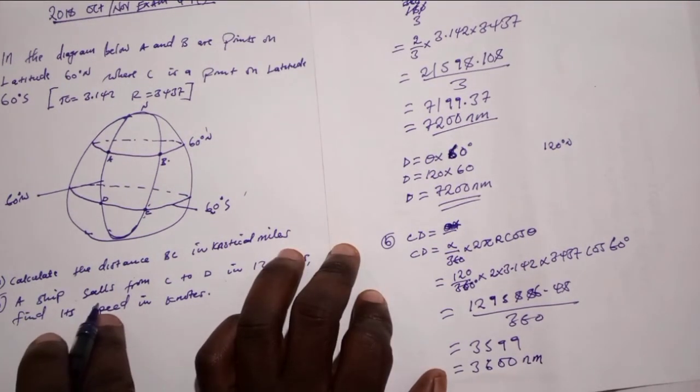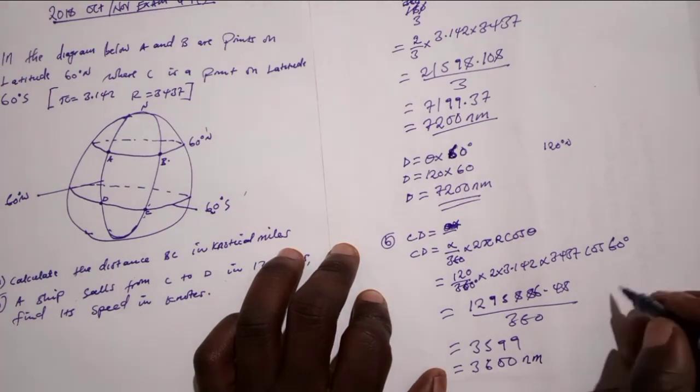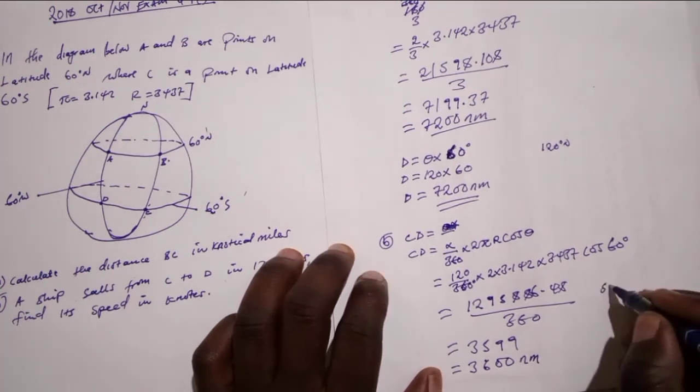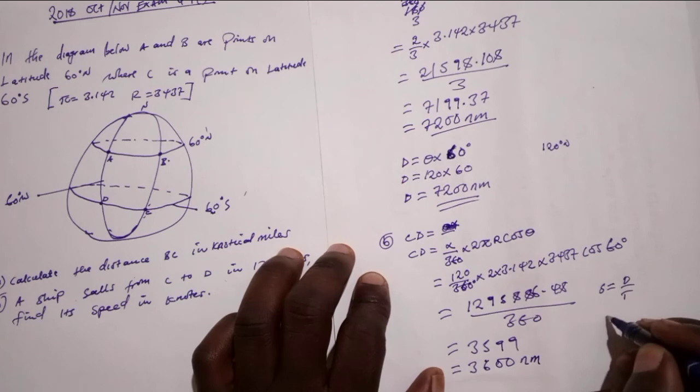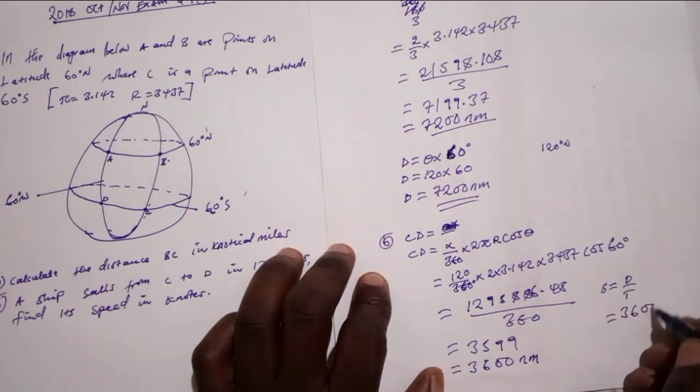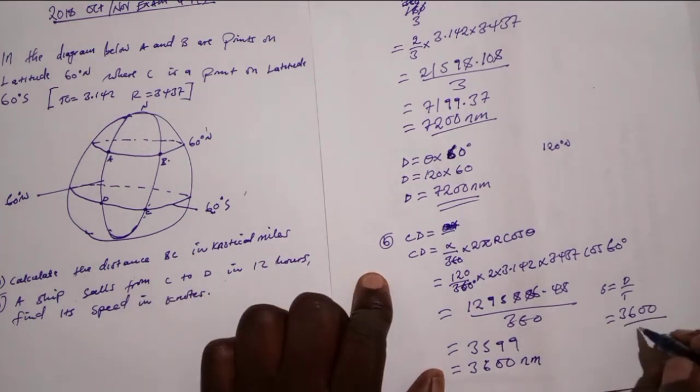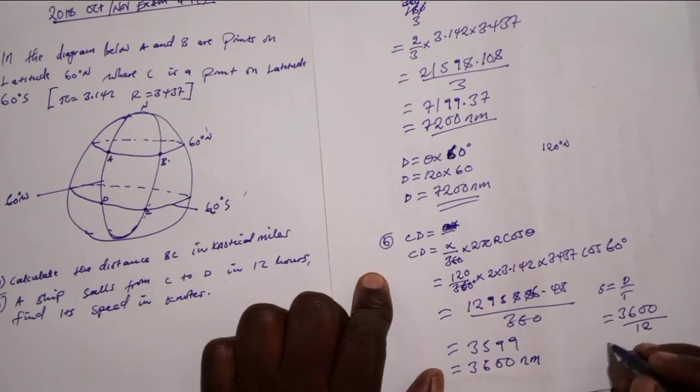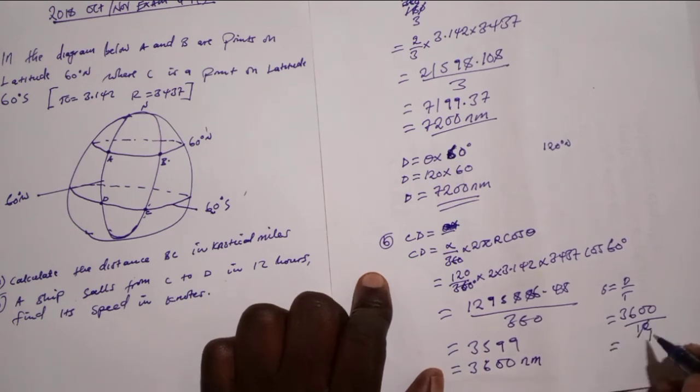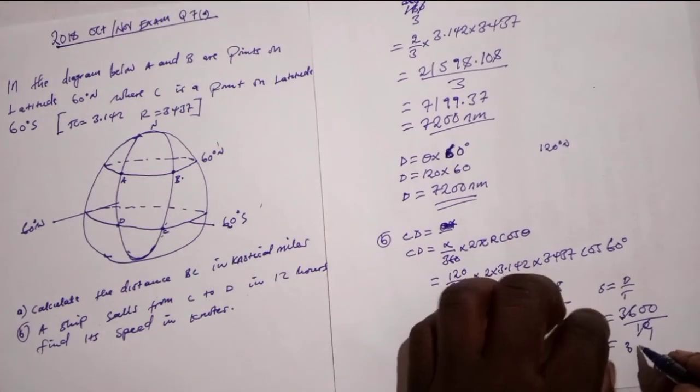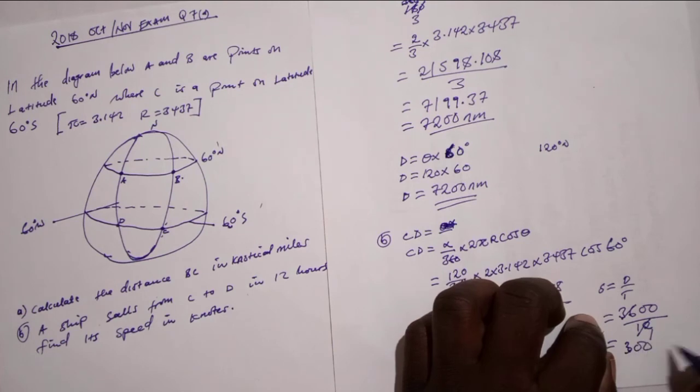Now in this question, we are told to find the speed. So the speed will be speed equals distance over time. Speed, we have 3600, then the time we are told that it took 12 hours, which is 12 hours. Then the answer will be 3600 divided by 12, which is 300 nautical miles.